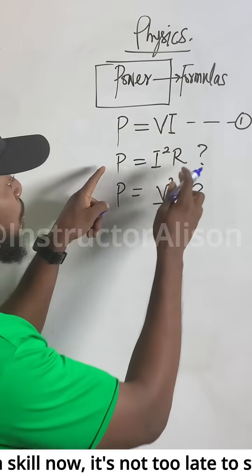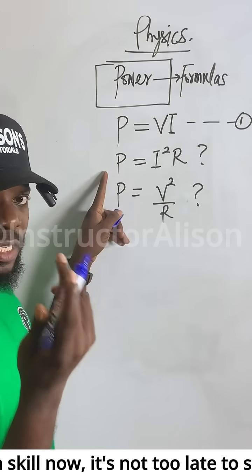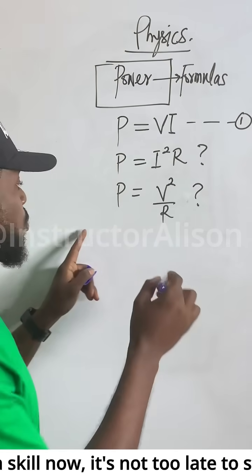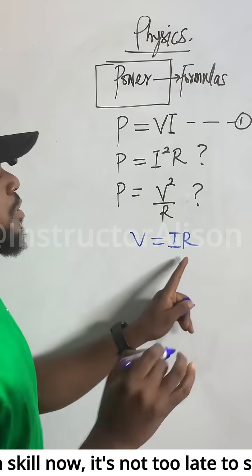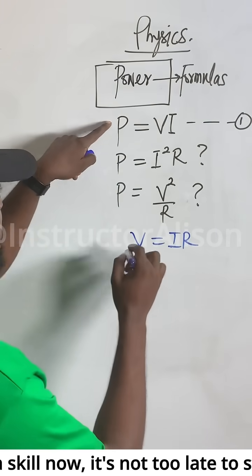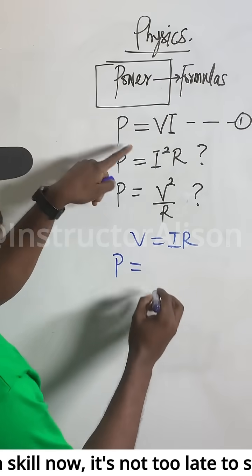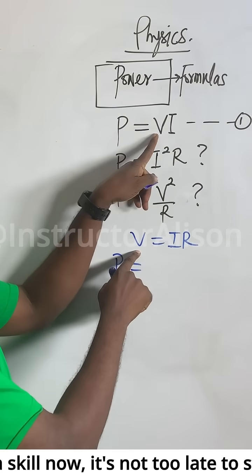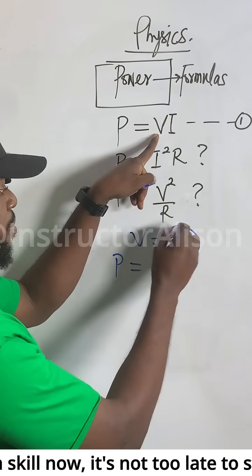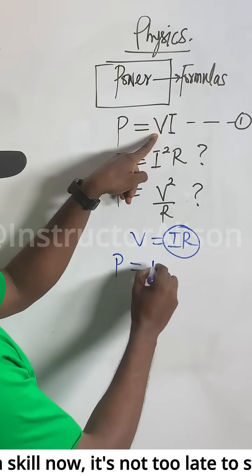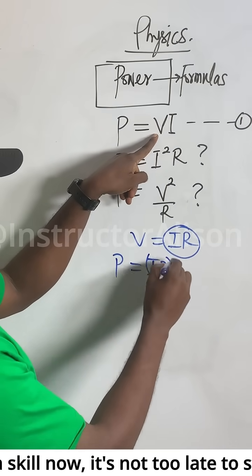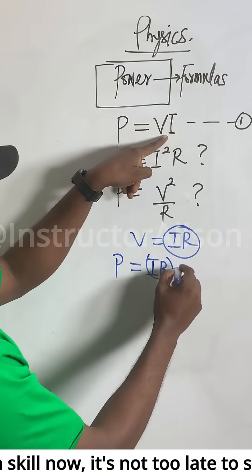This equation one, how would they get this equation two? It's simple. You'll remember Ohm's law. Ohm's law says V equals I times R, like this. So now, from this equation one, P equals VI. In place of this V, remember Ohm's law says we replace it with IR. So now I will get IR. This IR is for V, I is already there outside.